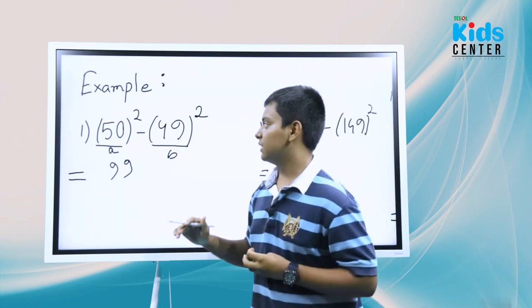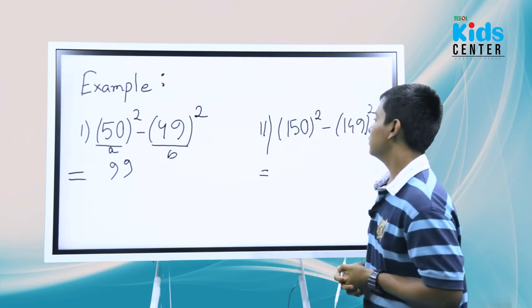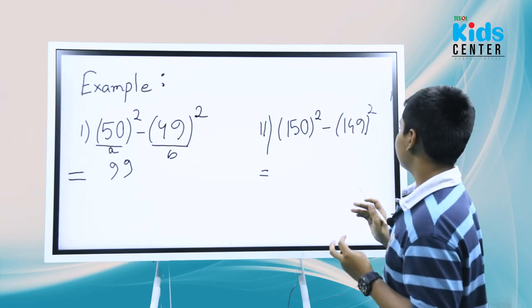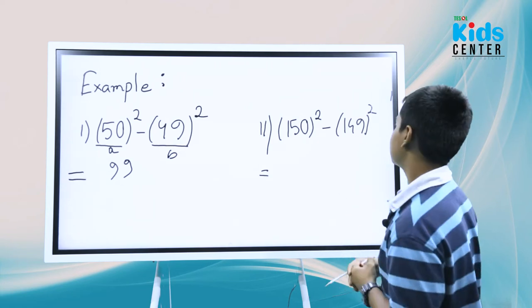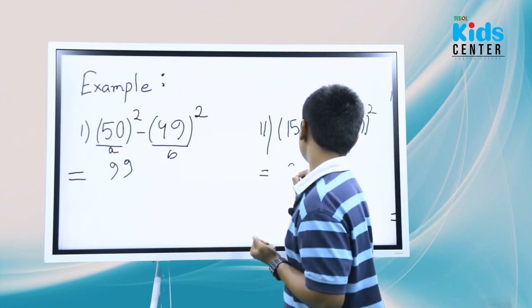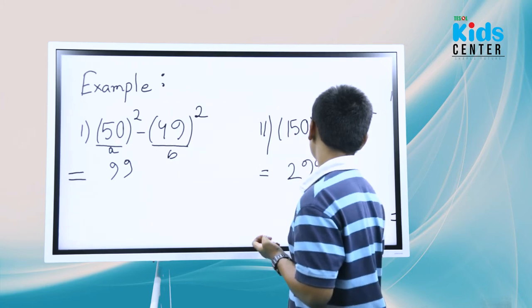Now 150 squared minus 149 squared. How can we get the result here? Just add them. It's very easy. One plus one is two, five plus four is nine, so 299.